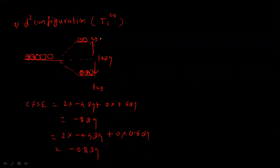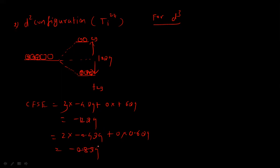For D3 configuration, there are three electrons. All three enter the lower T2G orbital. CFSE = (3 × −4dq) + (0 × +6dq) = −12dq. The electronic configuration is T2G³ EG⁰. This result holds regardless of whether the ligand field is weak or strong.